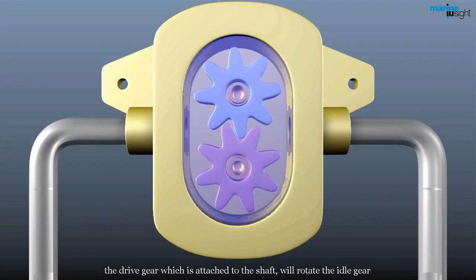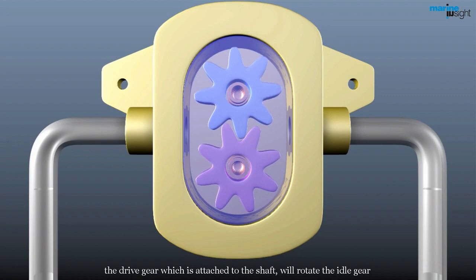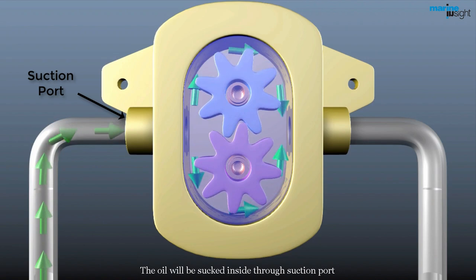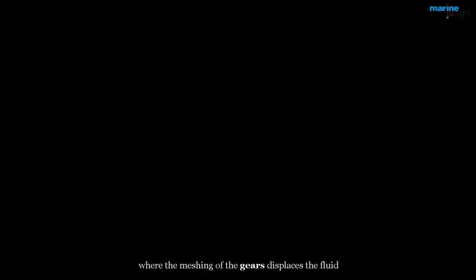When the motor starts and slowly rotates the horizontal shaft, the drive gear which is attached to the shaft will rotate the idle gear. The oil will be sucked inside through suction port. The fluid is carried by the gears to the discharge side of the pump where the meshing of the gears displaces the fluid.